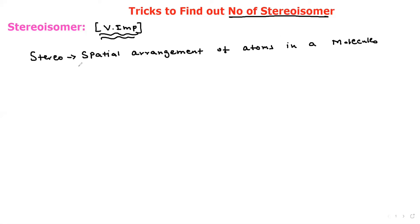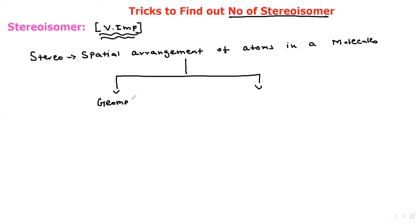Stereoisomers are of two types: one is geometrical isomerism and the other is optical isomerism.